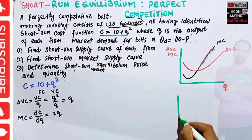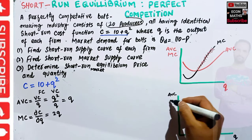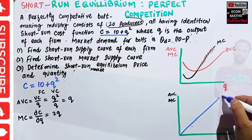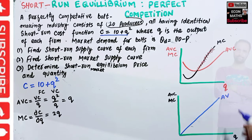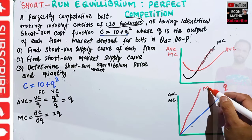Let us draw this. Output of each firm is on the horizontal axis, and AVC and MC are on the vertical axis. Since AVC = Q, it is a straight line. MC = 2Q has a slope twice that of AVC. So the MC curve is steeper than the AVC line.